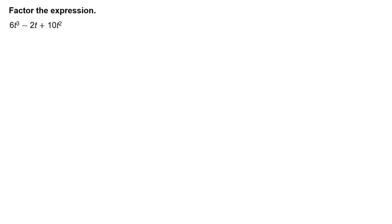Factor the expression 6t cubed minus 2t plus 10t squared. First, write the original expression 6t cubed minus 2t plus 10t squared.